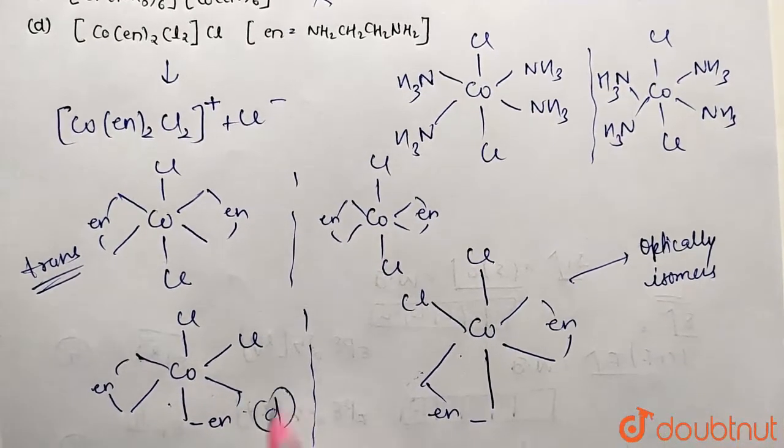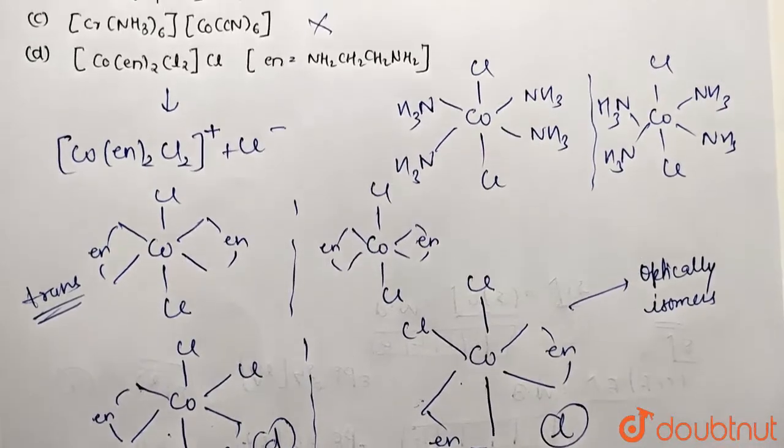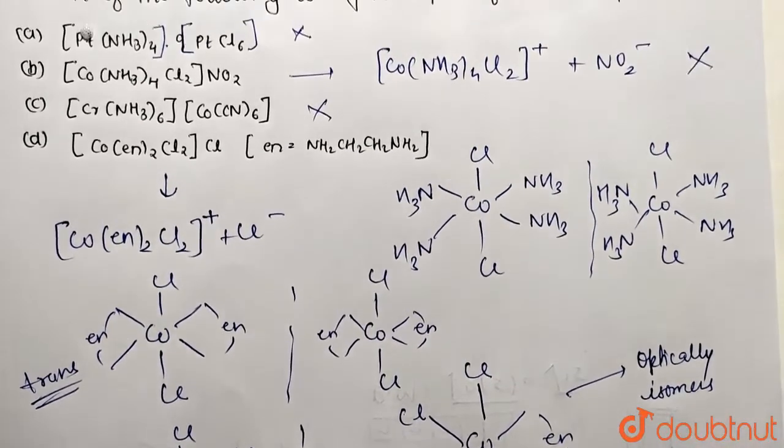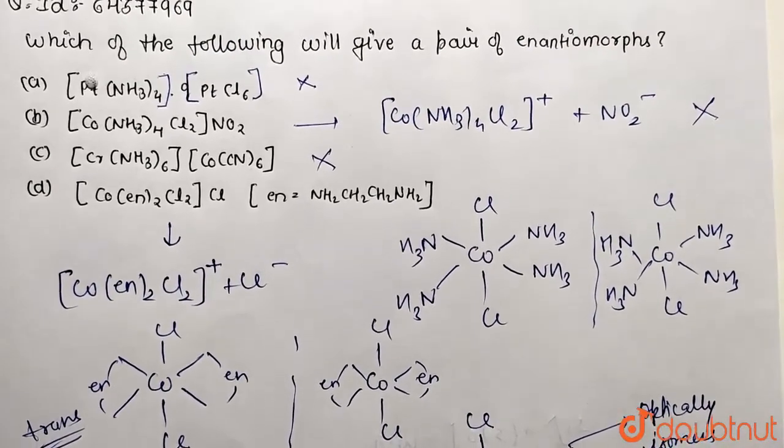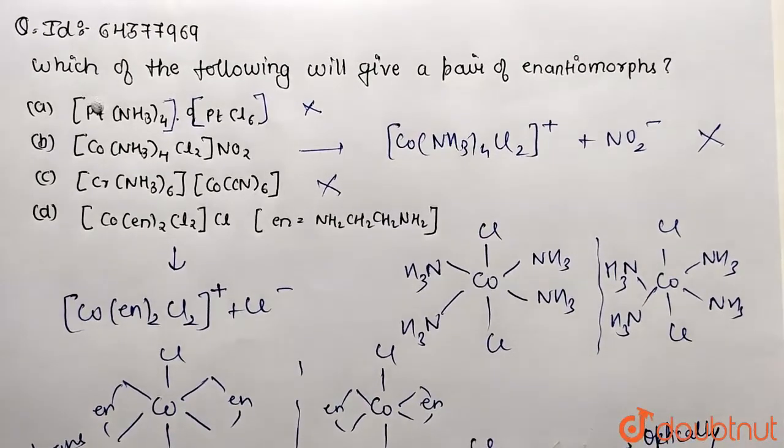So what is going to be our answer? Answer is going to be option D, which is containing a possibility of pair of enantiomers.